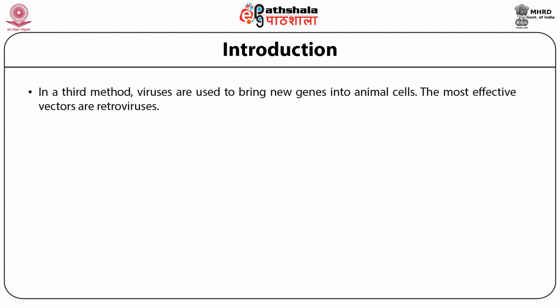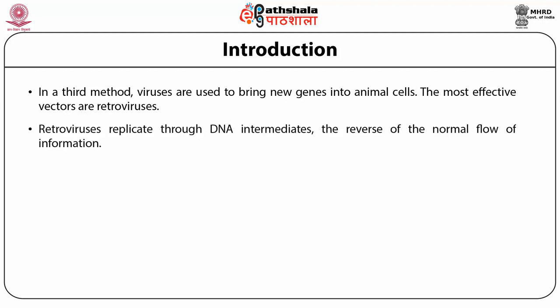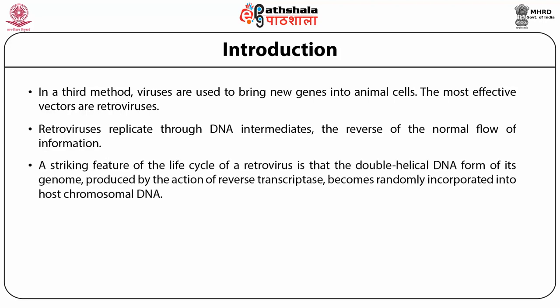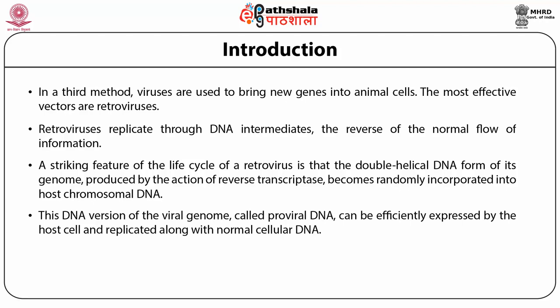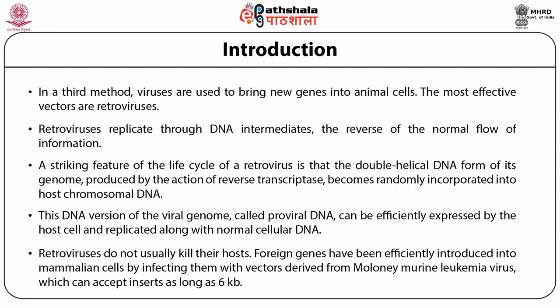In a third method, viruses are used to bring new genes into animal cells. The most effective vectors are retroviruses. Retroviruses replicate through DNA intermediates, the reverse of the normal flow of information. A striking feature of the retrovirus life cycle is that the double-helical DNA form of its genome, produced by reverse transcriptase, becomes randomly incorporated into host chromosomal DNA. This DNA version of the viral genome is called proviral DNA. It can be efficiently expressed by the host cell and replicated along with normal cellular DNA. Retroviruses do not usually kill their hosts.